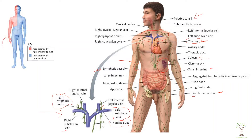Our small intestine contains a large amount of immune cells. We have a lot of lymph nodes surrounding the digestive tract because it is an important entry point for pathogens through the foods we consume. The large intestine also contains microflora — healthy, beneficial microorganisms that help to protect us as well.